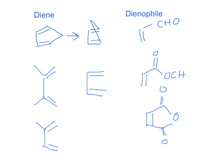Here are some examples of dienophiles. From these examples, a dienophile does not necessarily have to be just a simple alkene — it can be more complex, having substituents like those shown here.